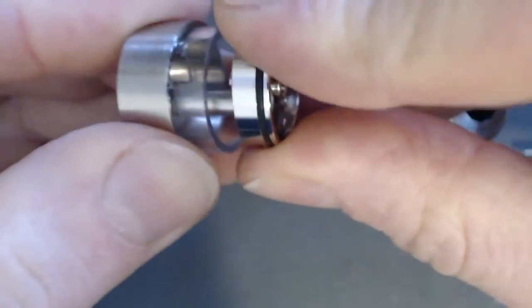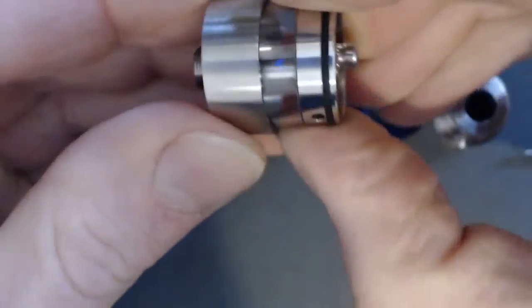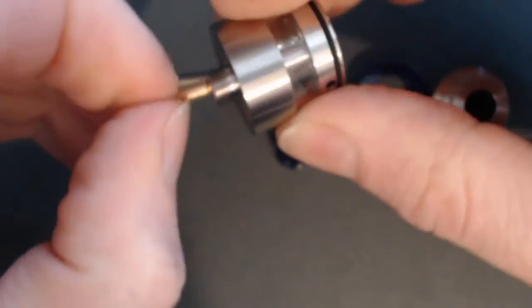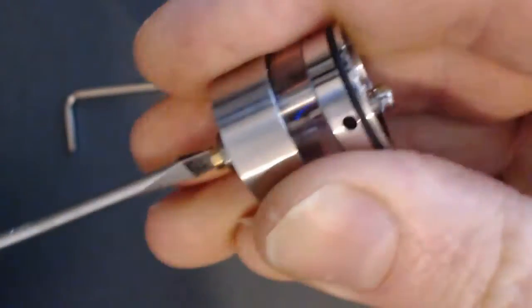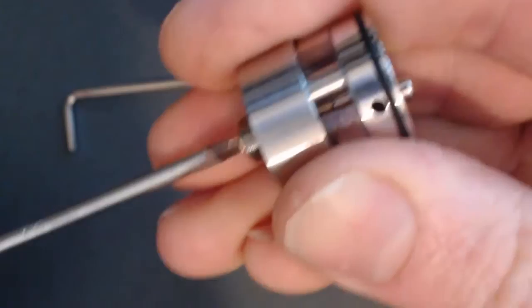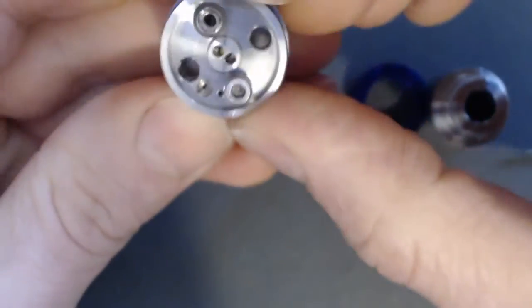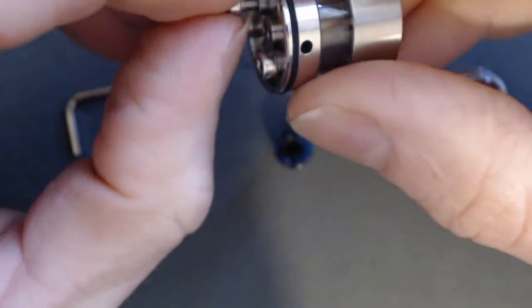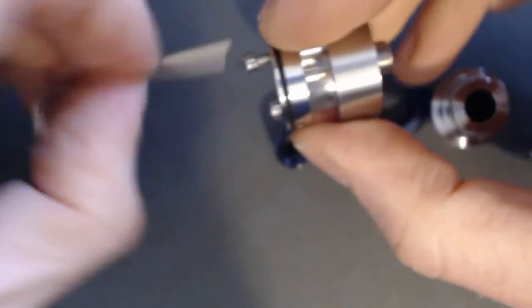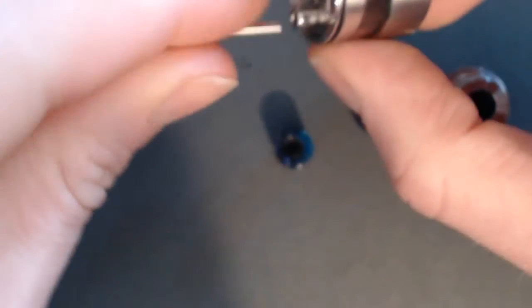You can take out the polycarbonate tank section, there's an o-ring in the bottom there and that's the base. So it's nice that it comes apart like that so you can get in there and clean it out when you're changing juice flavors.